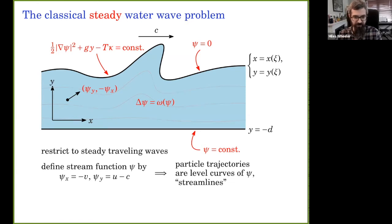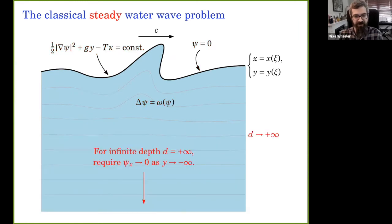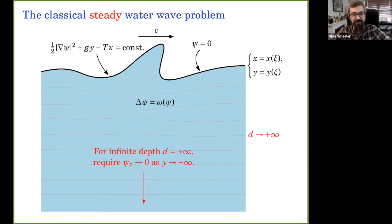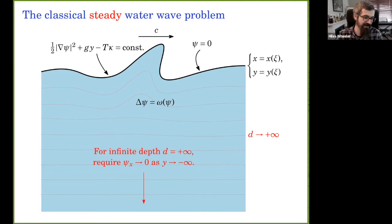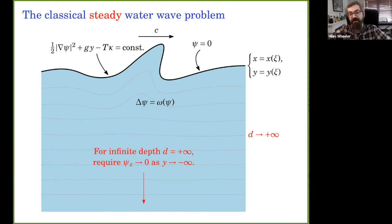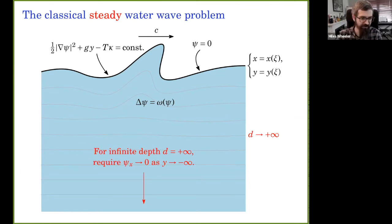One more aspect of the setup: I'll later want to let the depth be infinite. If the depth is infinite there's no bottom boundary to impose a Dirichlet condition on, so instead I impose conditions on the velocity field at infinity — essentially that all streamlines are flat at infinity, and typically something about the horizontal velocity as well.